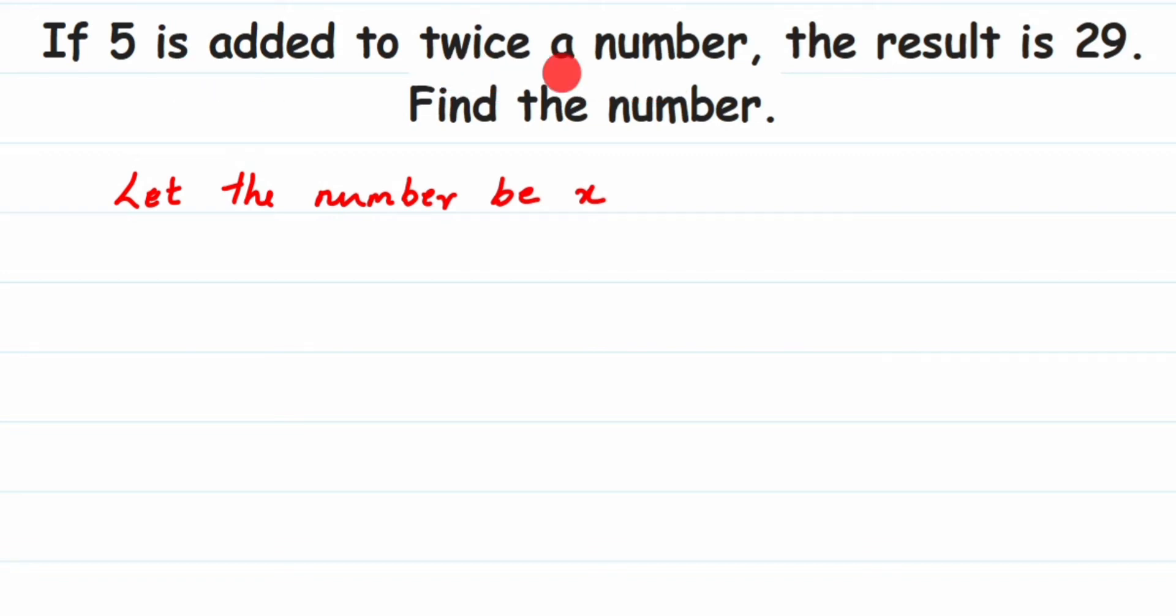Now they have given the relation that 5 is added to twice a number. So we are adding 5 to twice a number. But what is twice a number? Twice is nothing but 2 times a number or double of the number. So here the number is x, so twice a number will be 2x.